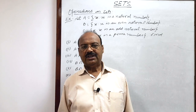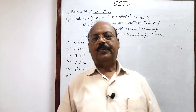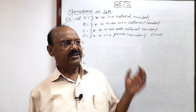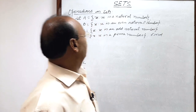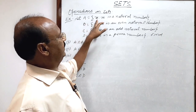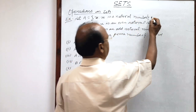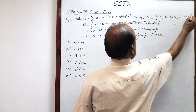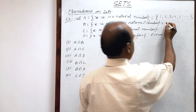Welcome students. Let us see a very interesting question from the chapter Sets. This question has been taken from the topic 'Operations on Sets'. These questions are related with intersection of two sets. Here, four sets A, B, C, D are given. Set A is a set having elements x such that x is a natural number — natural numbers are 1, 2, 3, 4, 5 and so on. Set B has elements x such that x is an even natural number.